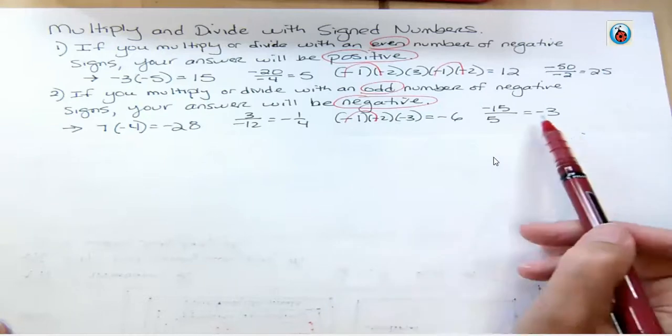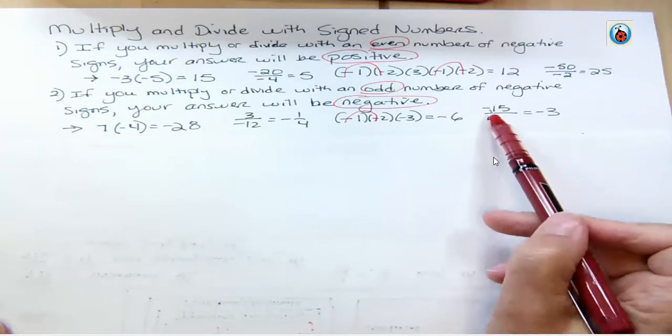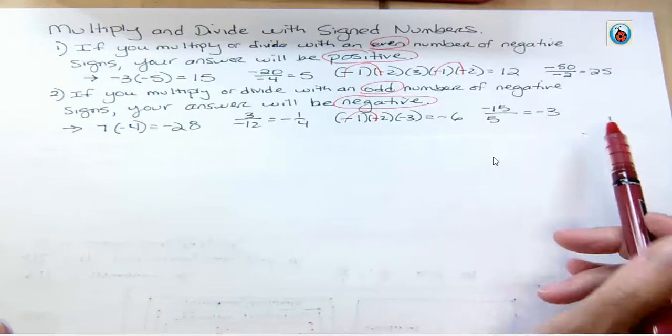And over here, finally, same thing. If I have a negative divided by a positive, that's 1. So that's going to give me a negative 3 overall.